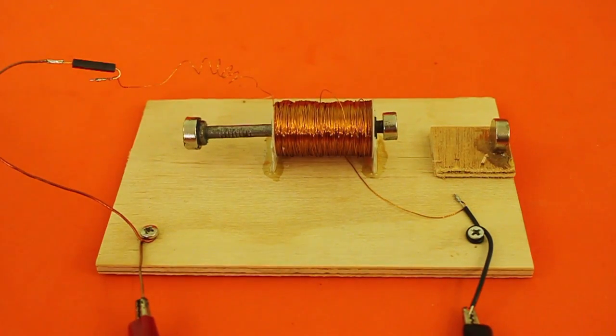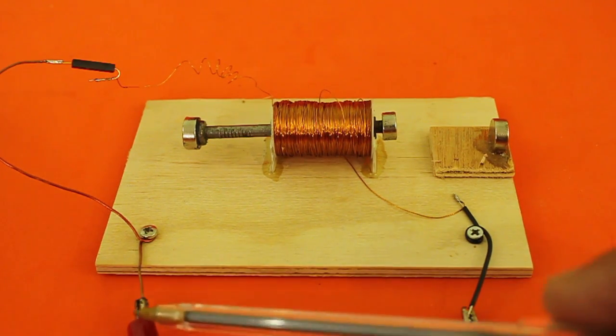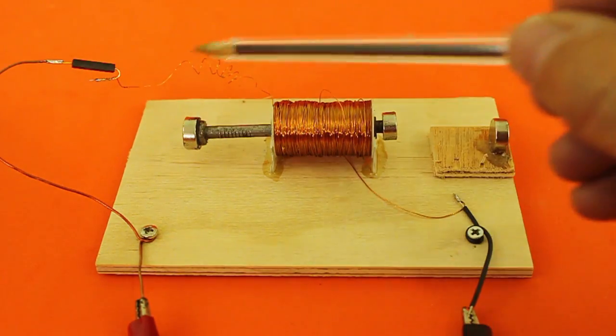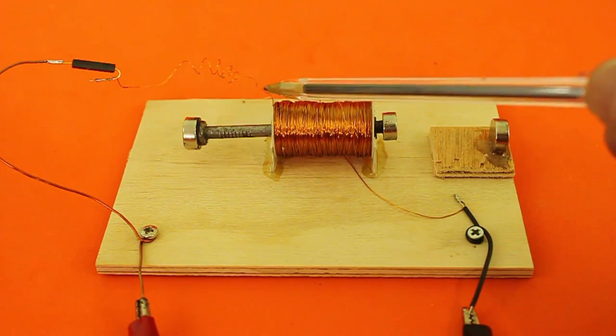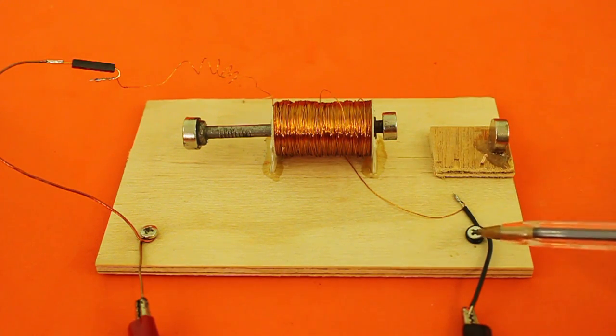I installed the third magnet and now the motor is finished. Here you have the positive from the power supply that goes through the magnetic switch to one of the ends of the coil. The other end of the coil goes directly to negative.